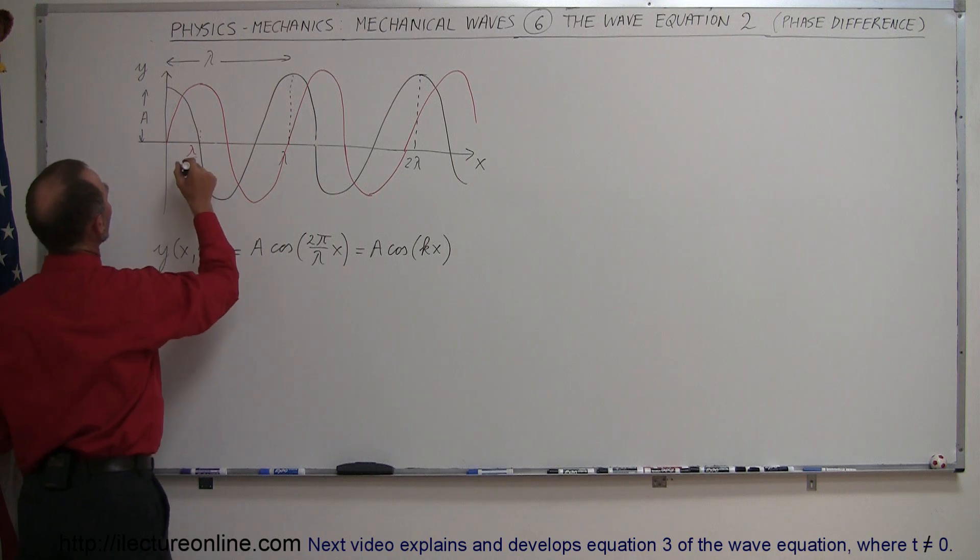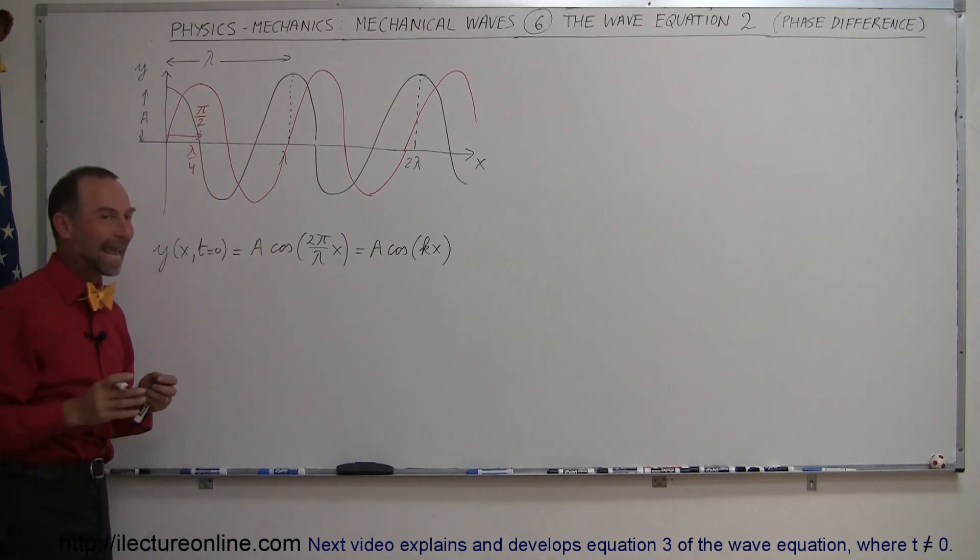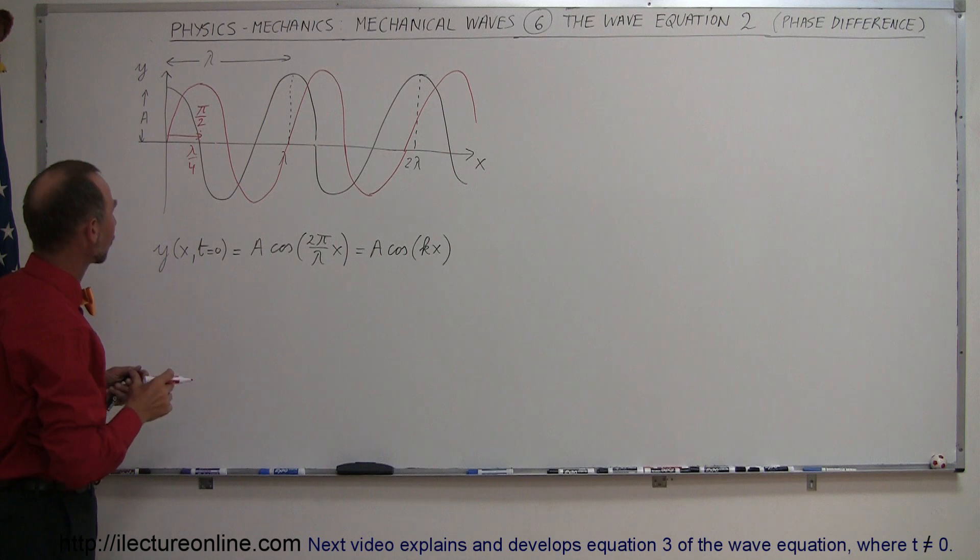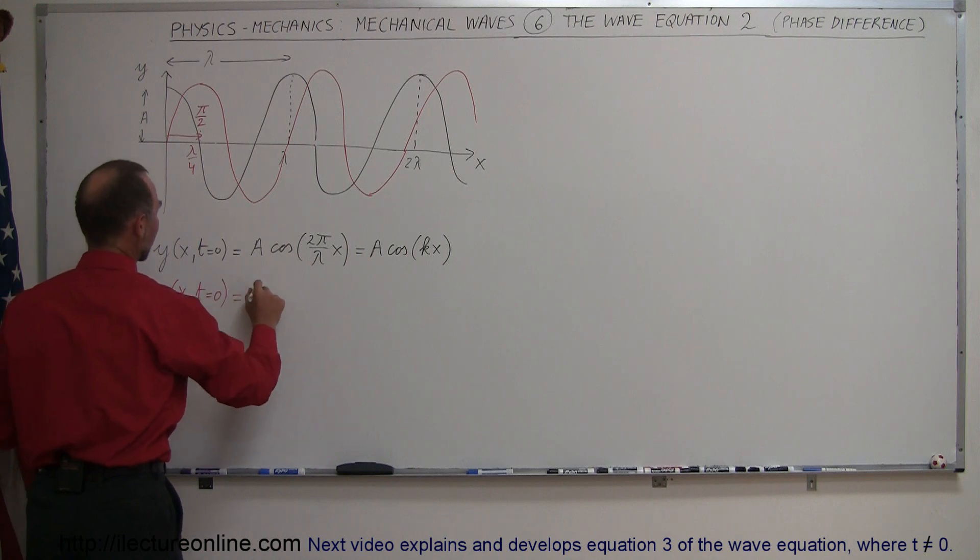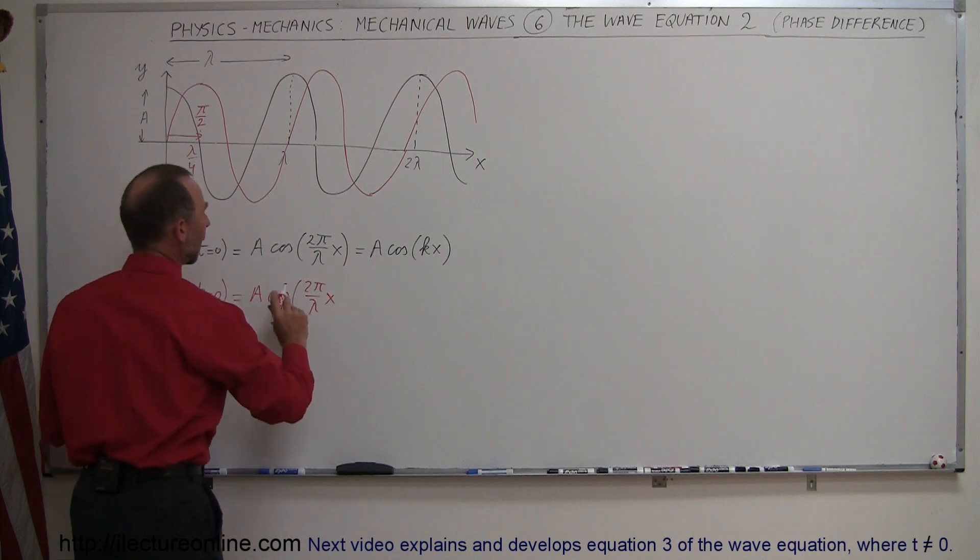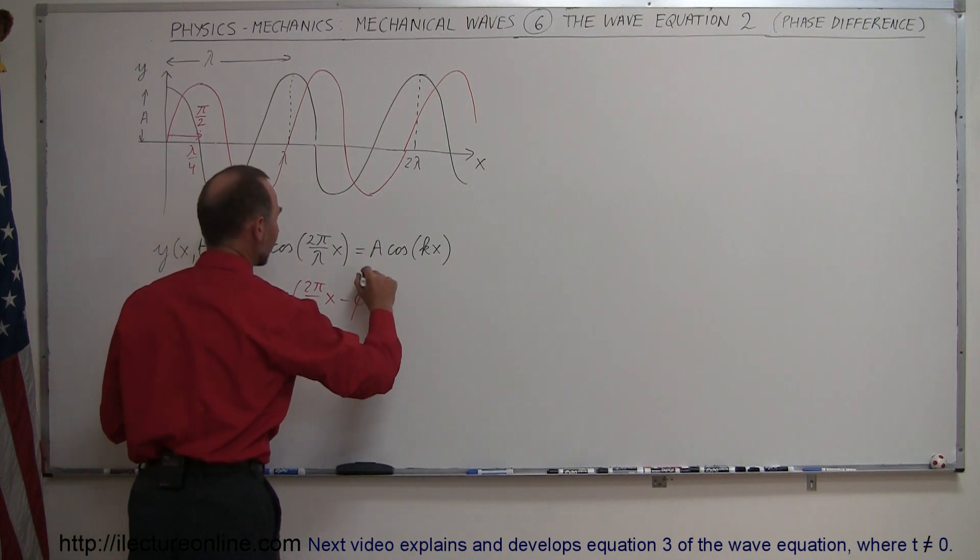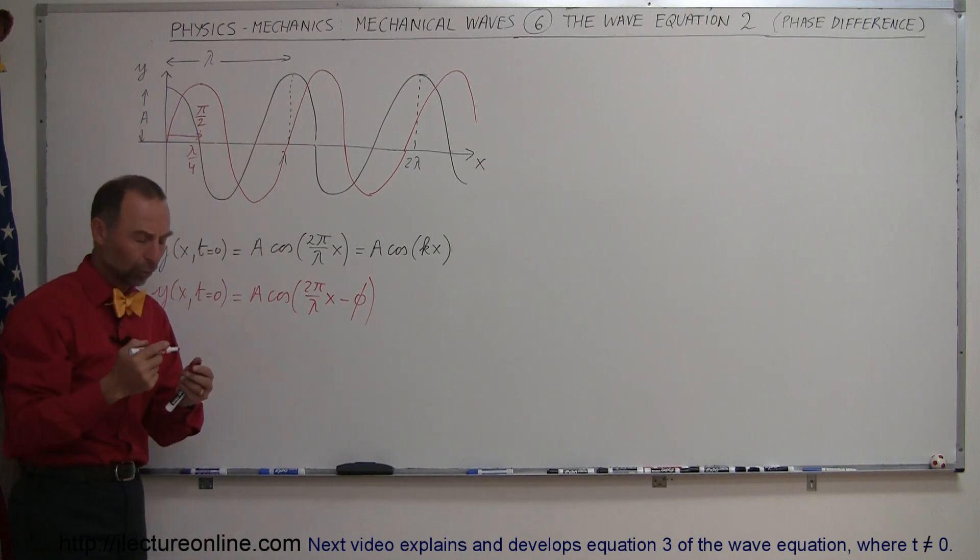So there the wave has been moved to the right at a distance by pi over 2. So the angle difference is half a pi, which is a quarter of a complete cycle. So we may remember from our trigonometry that when we do that, this equation now would become y, which is a function of x and t still kept to zero, is equal to a times a cosine of 2 pi over lambda x minus the phase angle. And of course, in this case, the phase angle is pi over 2, because we have to do it in terms of radians.